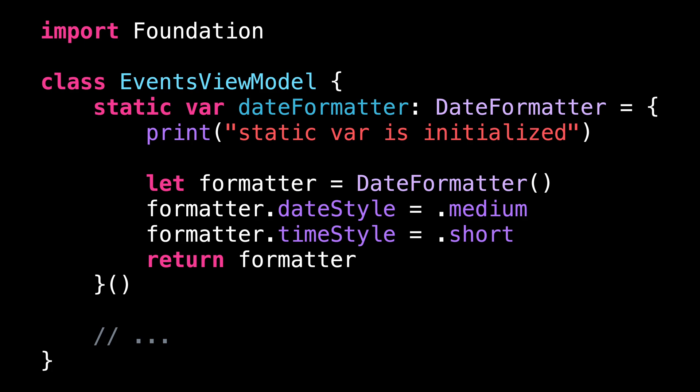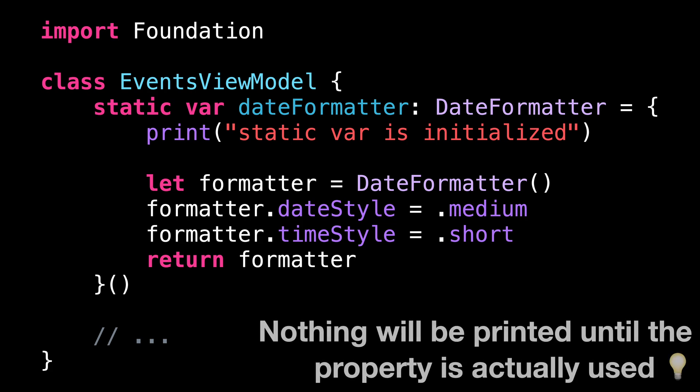And now if you start your app using this updated code, you'll see in the console that the print statement isn't executed. To be more precise, the print statement won't be executed until you reach the first line of code that actually uses the static property.